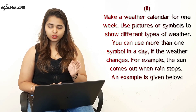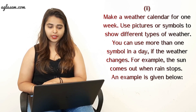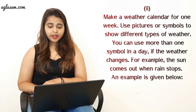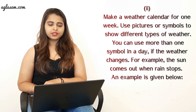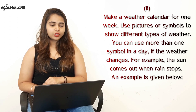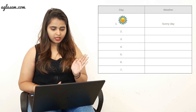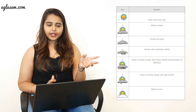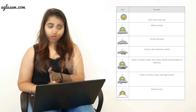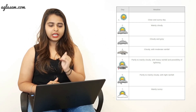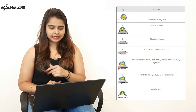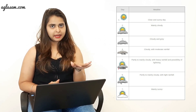Second part: Make a weather calendar of one week using pictures or symbols to show different types of weather. You can use more than one symbol in a day if the weather changes. The example is shown on screen. The week's weather: Day 1 — as given; Day 2 — mainly cloudy; Day 3 — cloudy and gray; Day 4 — cloudy with moderate rainfall; Day 5 — partly to mainly cloudy with heavy rainfall and possibility of lightning; Day 6 — partly cloudy with light rainfall; Day 7 — mainly sunny.